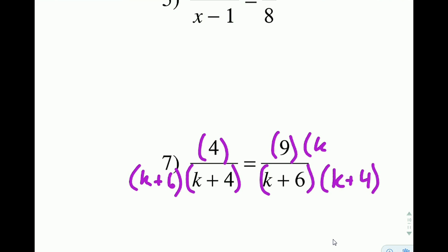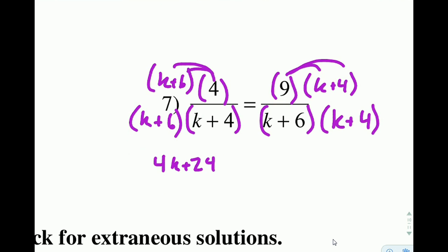Of course I know that I can't just do that to the bottom alone. I need to do it to the top and to the bottom. So let's do that. I'm going to distribute my numerators all the way across. So I end up with 4k plus 24 over all of that stuff. And I'm going to write it kind of lazily here. Equals 9k plus 36 over all of that stuff. The k plus 6 times k plus 4.